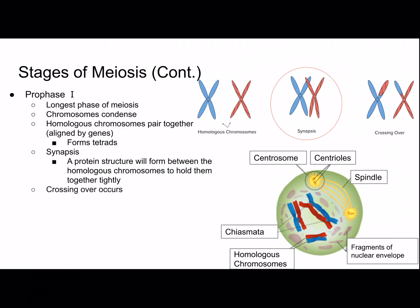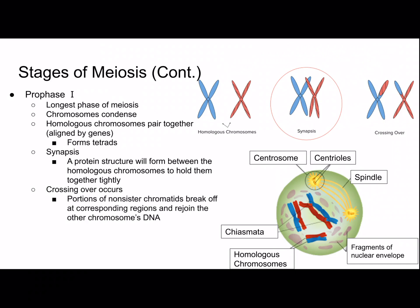Then crossing over occurs: portions of non-sister chromatids break off at corresponding regions and rejoin the other chromosome's DNA, because the two chromosomes have genes controlling the same traits at the same location on corresponding chromosomes. Then the spindle forms — kinetochores of the homologue attach to microtubules from a pole, which are important for pulling chromosomes around the cell.